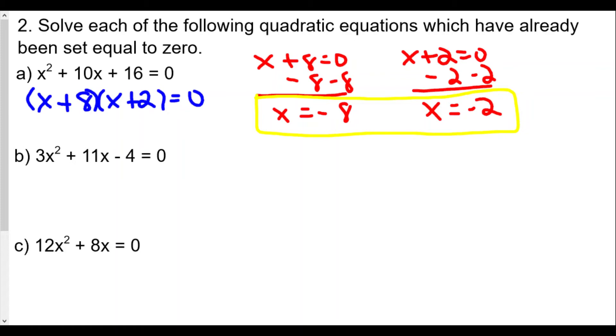Now factor this one, the second one, 3x squared plus 11x minus 4 equals 0. This one's a little more tricky to factor. I'm going to use a guess and check method where I know that the terms will be 3x and x for my first two here to get 3x squared.